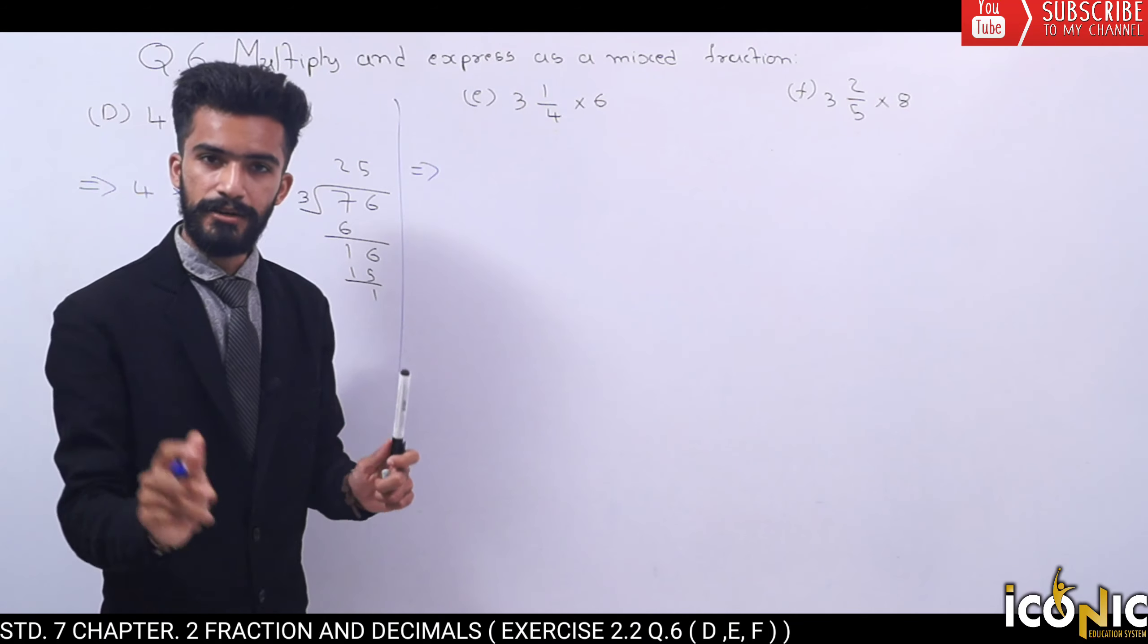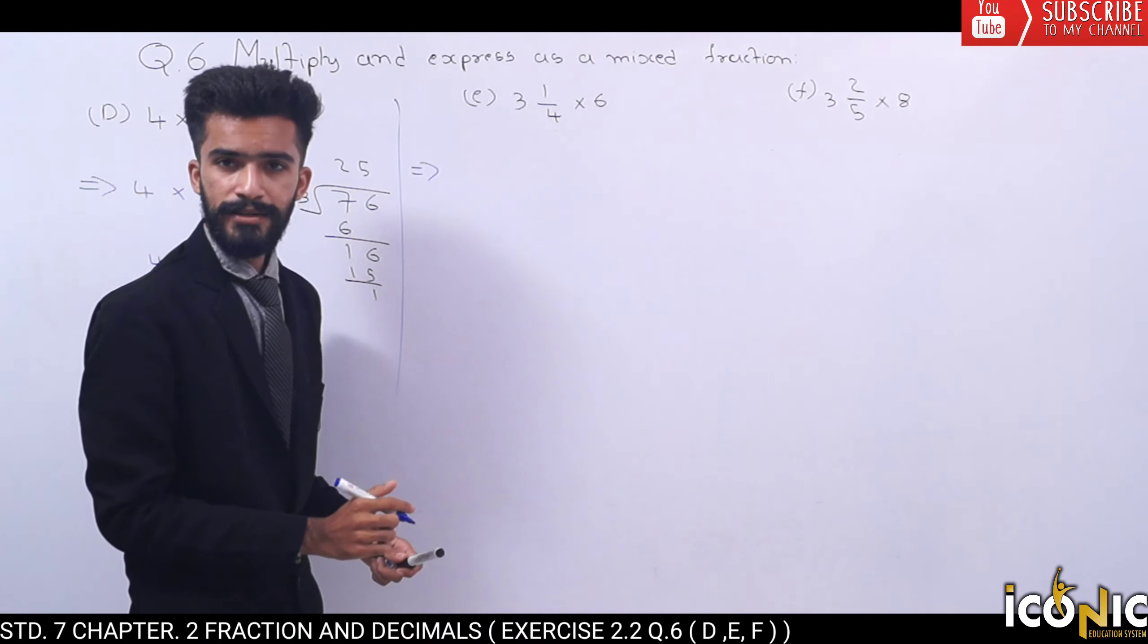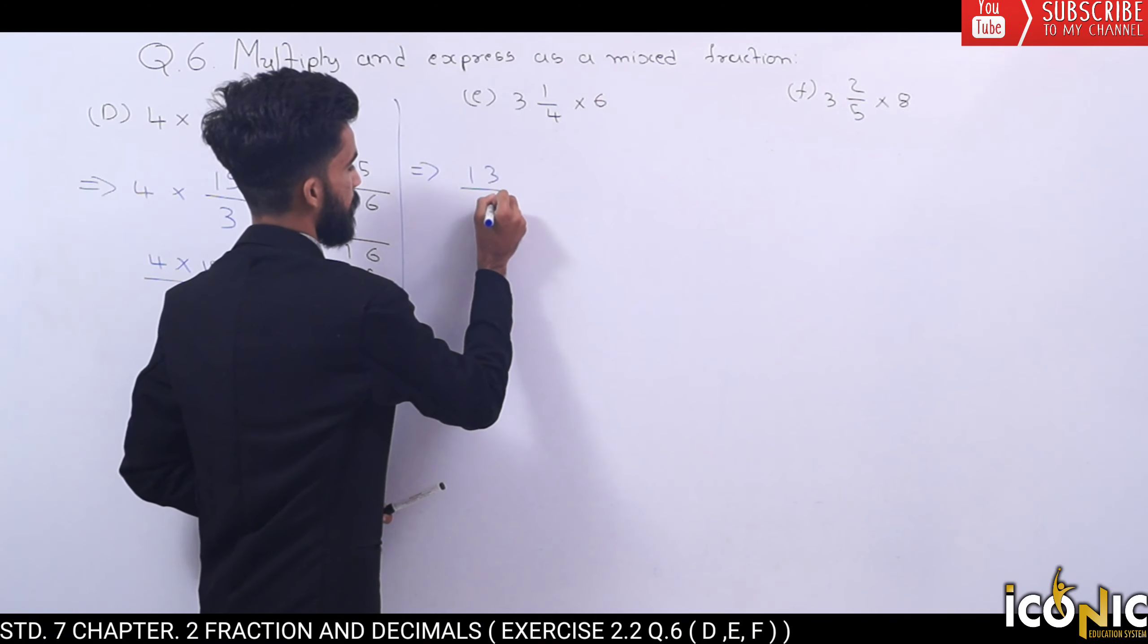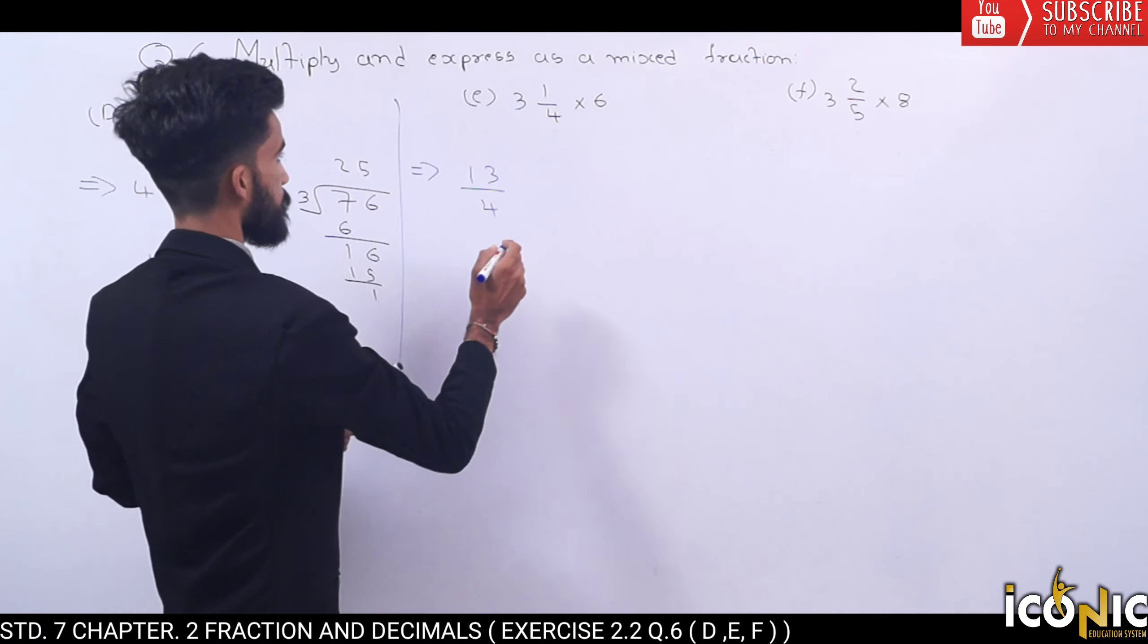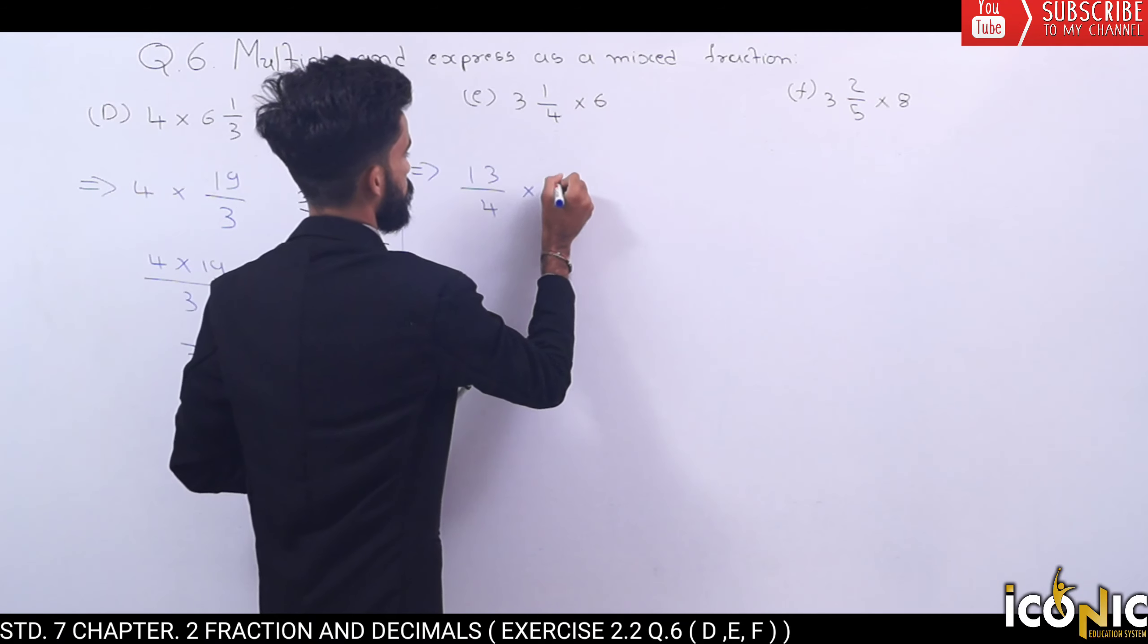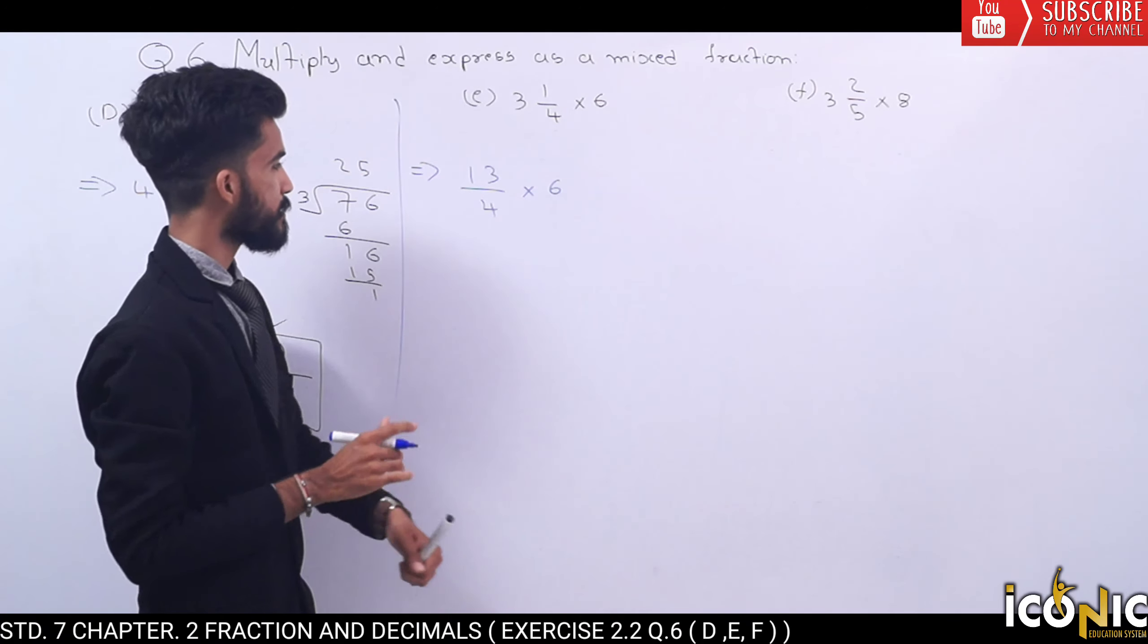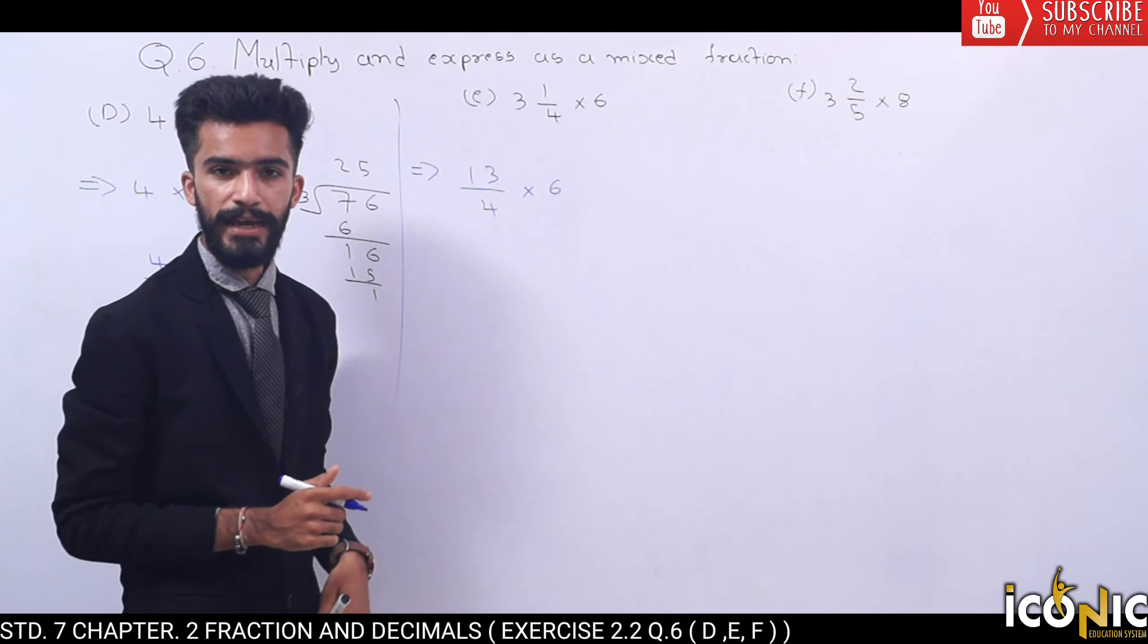First we have to convert to normal fractions. 3¼ means 3 times 4 is 12 plus 1 equals 13, so 13 upon 4. 13 divided by 4 into 6. Now what do we need to do? 13 multiplied by 6.